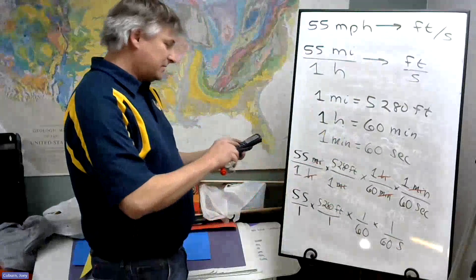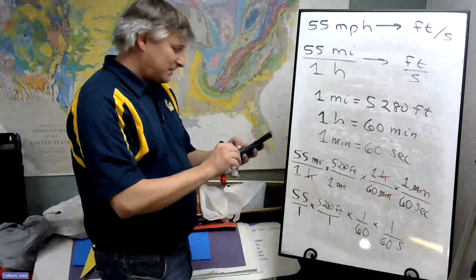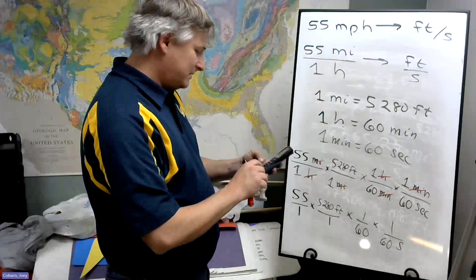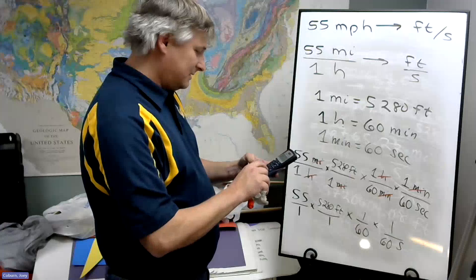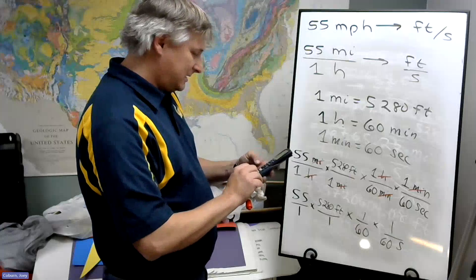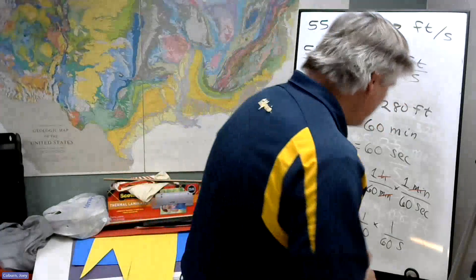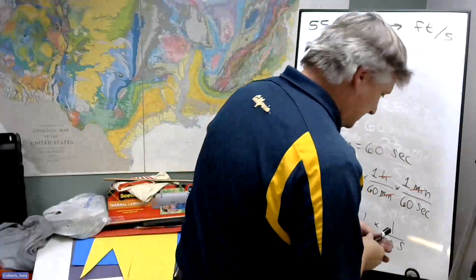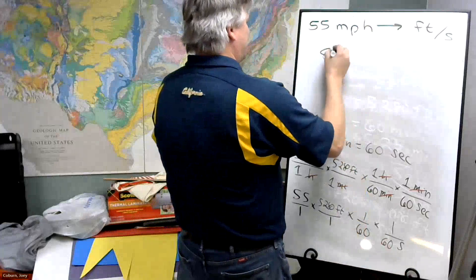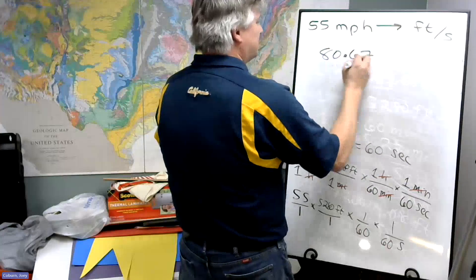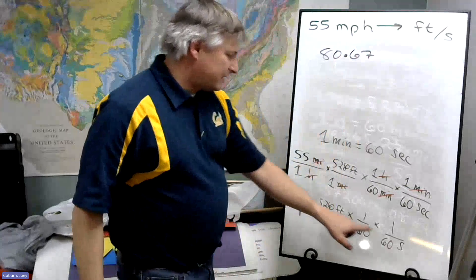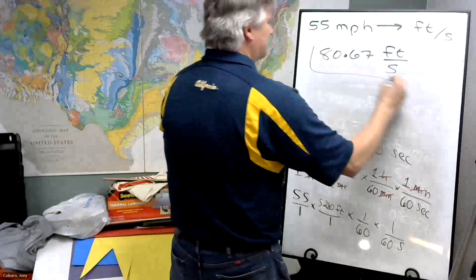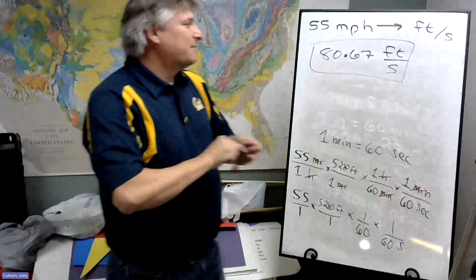So putting this into the trusty calculator, the one I know how to use: 55 divided by 1 times 5,280 divided by 1 times 1 divided by 60 times 1 divided by 60. And what we end up getting is 80.67, again rounding to the hundreds place. And then I have feet above, seconds below. Or 80.67 feet per second.